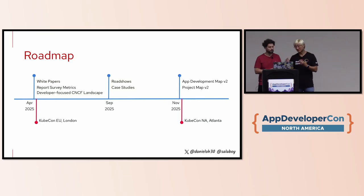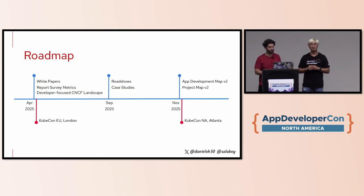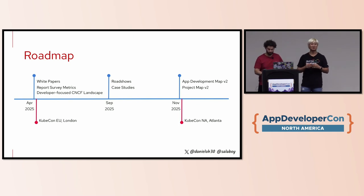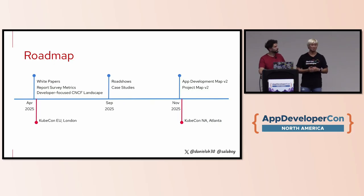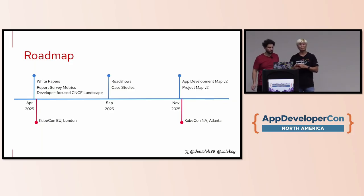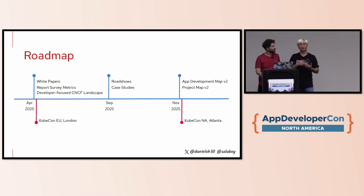We'll continue this work into next year — a new project mapping in version 2 — and we're looking forward to case studies and workshops. We'd be happy to join local user groups and hear your ideas around CNCF projects. Also, if you've submitted talks to KubeCon and noticed the SDLC track, which is a bit awkward for application developers, we now have a brand new track at KubeCon London — the Application Development track — which is a working group achievement to promote application development.